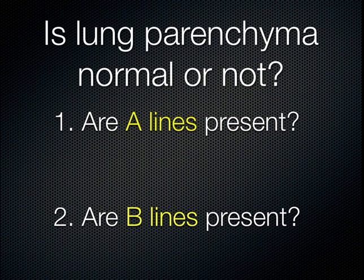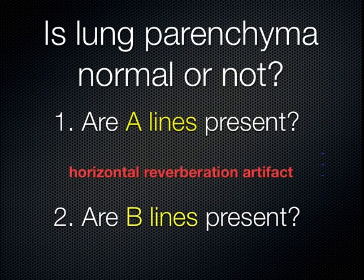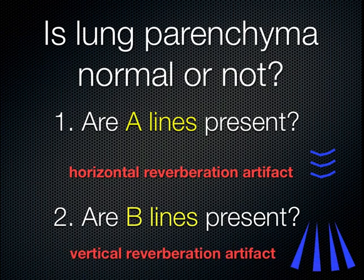Going back to the two fundamental questions: is the lung parenchyma normal or not? The underlying questions you're essentially asking are: are A lines present, and are B lines present? It is the evaluation of these artifacts — created by the interfaces with different acoustical impedances — that gives you clues to what the underlying lung pathology may be. A lines are horizontal reverberation artifact, and B lines are vertical reverberation artifact.